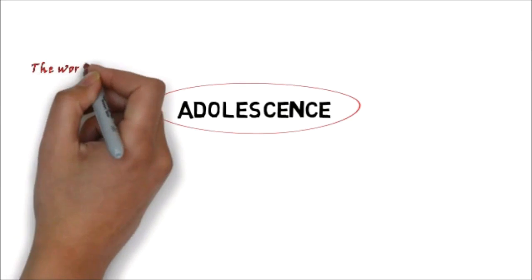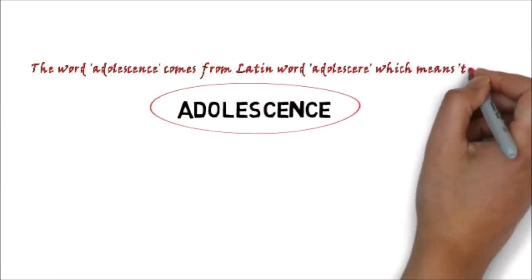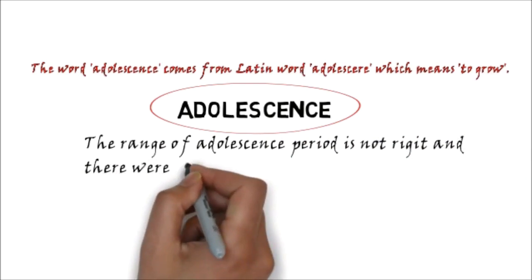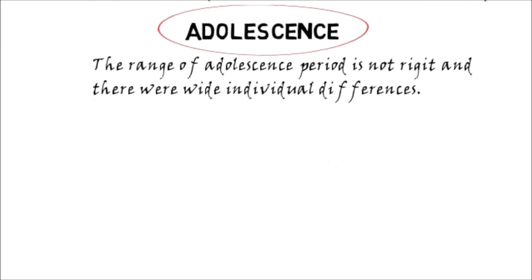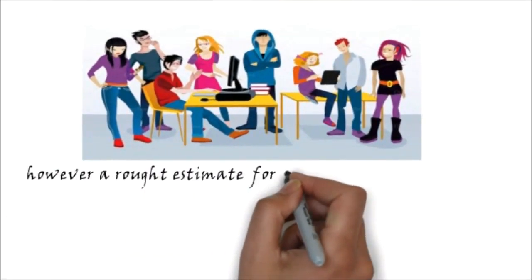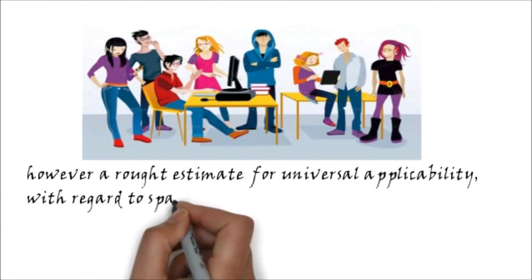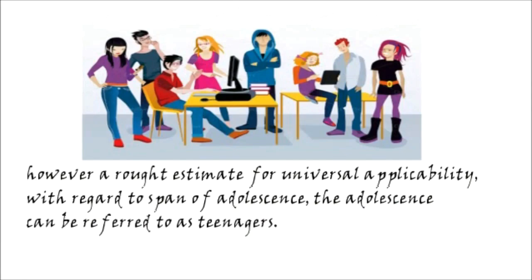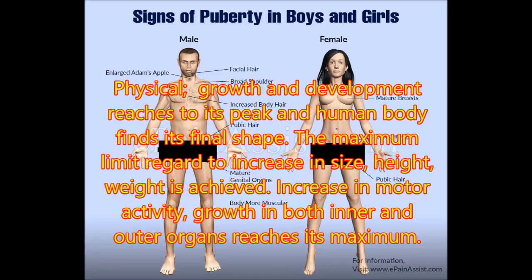Adolescence: the word adolescence comes from the Latin word 'adolescere,' which means to grow. The range of the adolescence period is not rigid, and there are wide individual differences. A broad estimate for universal applicability places adolescence among the teenage years. Physical development during adolescence: growth and development reach their peak and the human body finds its final shape. Maximum increases in size, height, and weight are achieved, along with an increase in motor activities, and growth in both inner and outer organs reaches its maximum.